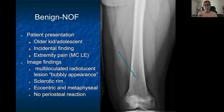In terms of location, non-ossifying fibromas are generally eccentric, meaning right up against the cortex of the bone and metaphyseal in the long bone — not at the growth plate, not necessarily in the diaphysis, but generally in the metaphysis. These do not have any periosteal reactions since they are benign. Treatment, especially if asymptomatic, is just observation. If they are large and symptomatic, pathologic fractures could occur, so some form of fixation may be needed, but for the most part just observation.